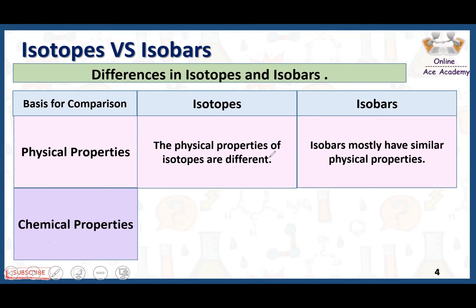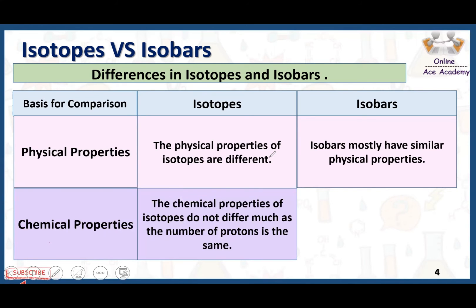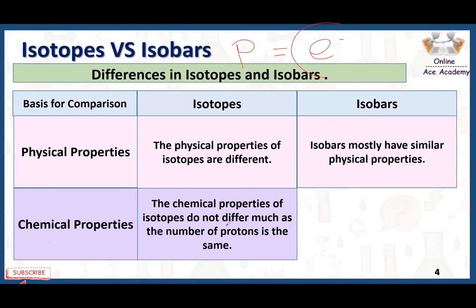Regarding chemical properties: the chemical properties of isotopes do not differ much because the number of protons are the same. Since the atomic number is the same, the number of electrons is also the same — because in an atom, the number of protons equals the number of electrons. When we have the same number of electrons, there is no change in the number of shells or electronic configuration, so there is no change in chemical properties.